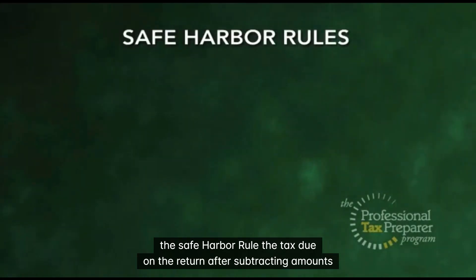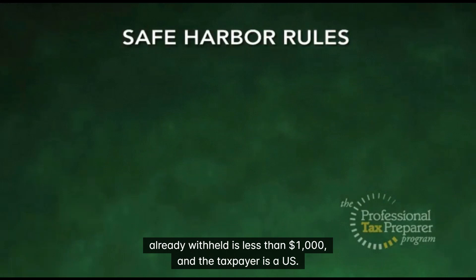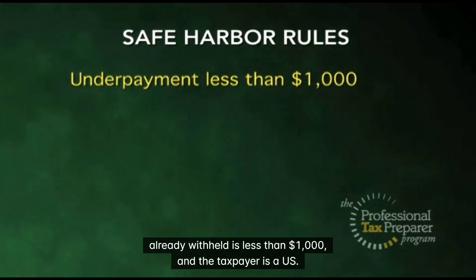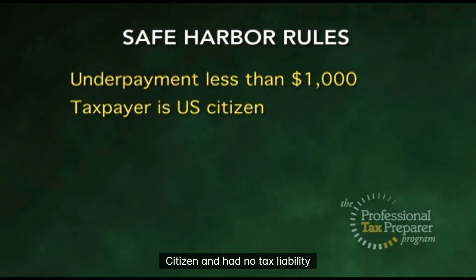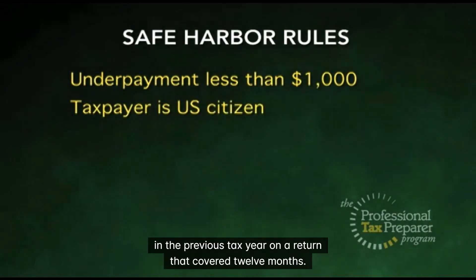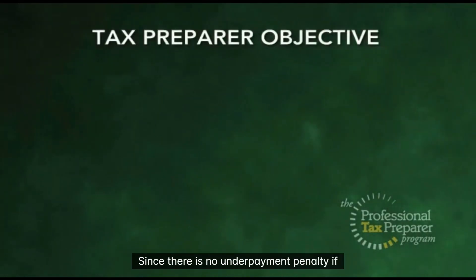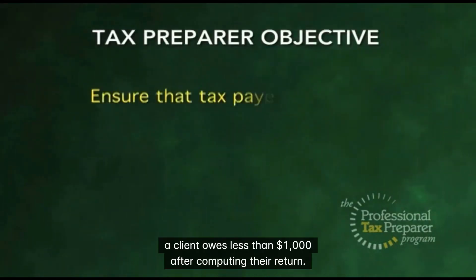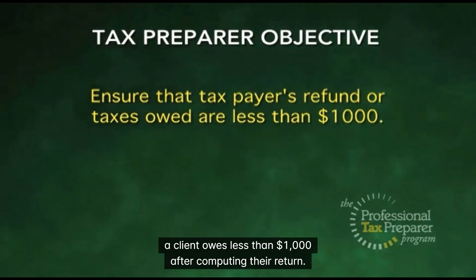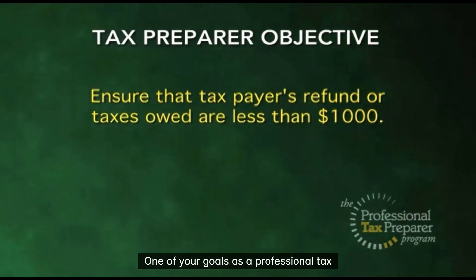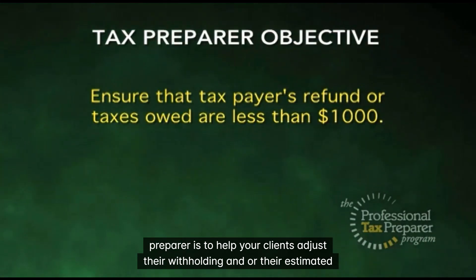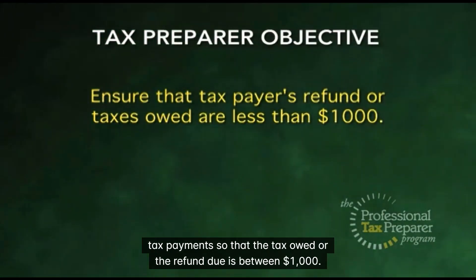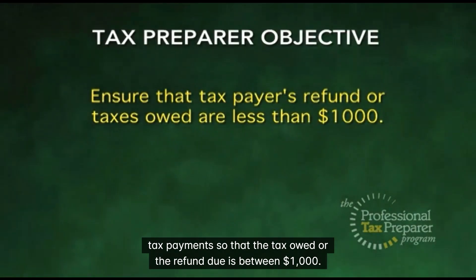The tax due on the return after subtracting amounts already withheld is less than $1,000, and the taxpayer is a U.S. citizen and had no tax liability in the previous tax year on a return that covered 12 months. Since there is no underpayment penalty if a client owes less than $1,000 after computing their return, one of your goals as a professional tax preparer is to help your clients adjust their withholding and estimated tax payments so that the tax owed or refund due is within $1,000 either way.